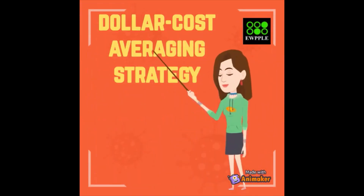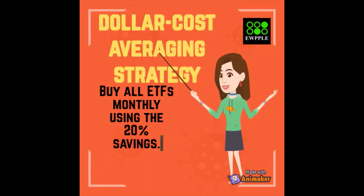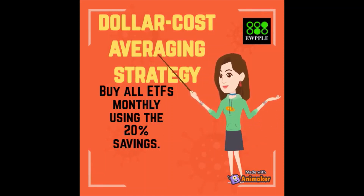4. Dollar Cost Averaging Strategy. Buy all ETFs monthly using the 20% savings.